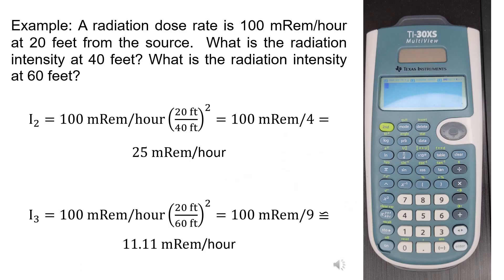For example, a radiation dose rate is 100 mRem per hour at 20 feet from the source. What is the radiation intensity at 40 feet or 60 feet? The intensity at 40 feet equals 100 times (20 divided by 40) raised to the power 2, which equals 25 mRem per hour, which is actually one-fourth of the original value.